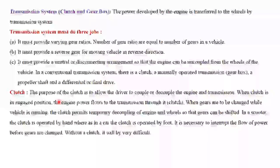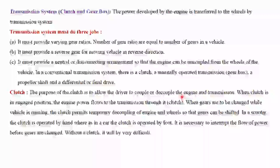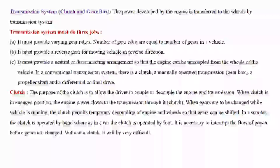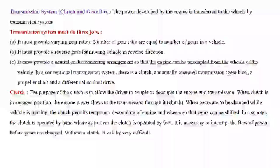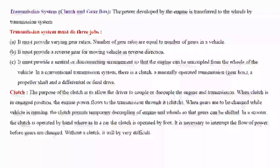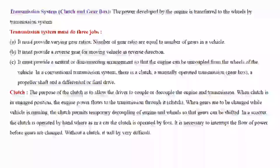The clutch allows the driver to engage or disengage the engine and transmission. When the clutch is in the engaged position, engine power flows from the engine through the clutch to the gearbox, through the gearbox to the propeller shaft, through the propeller shaft to the differential, and from the differential to the axle and wheels. The purpose of the clutch is to enable the driver to disconnect the drive from the wheels and engage the drive from the engine to the power gradually while moving the vehicle from rest.